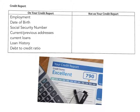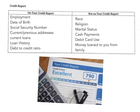Now let's look at things that are NOT on your credit report. The following will not be found: your race, your religion, your marital status, your cash payments, how many times you use your debit card, and money loaned to you from family and friends.